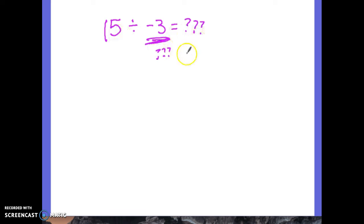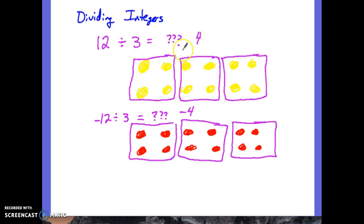Here's what we really need to keep in mind: that multiplication and division are opposites to each other. Let me back up a couple slides and just show you. 12 divided by 3 is 4. If I do 4 times 3, I get 12. Okay, opposites to each other. If I do negative 12 divided by 3, I get negative 4. If I do negative 4 times 3, I get negative 12.